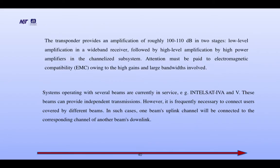The transponder provides an amplification of roughly 100 to 110 dB in two stages: low-level amplification in a wideband receiver, followed by high-level amplification by high-power amplifiers in the channelized subsystem. Attention must be paid to electromagnetic compatibility owing to the high gains and large bandwidths involved.